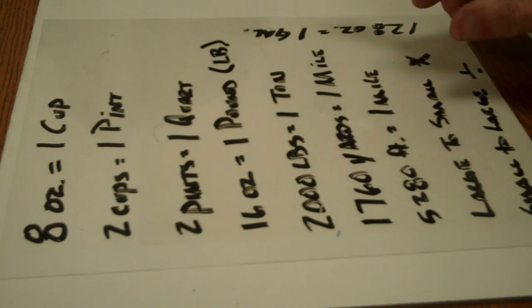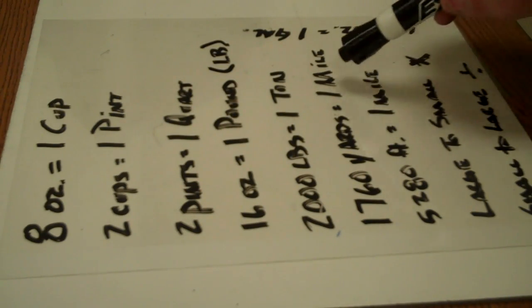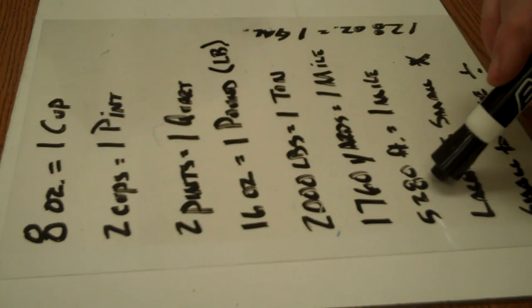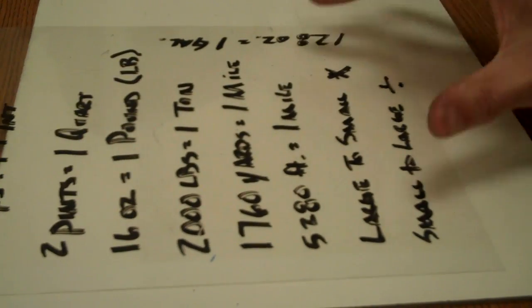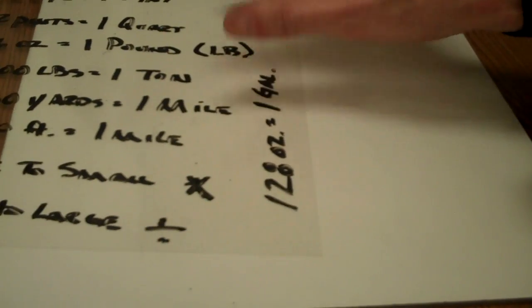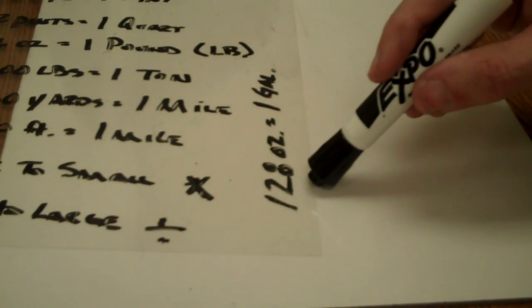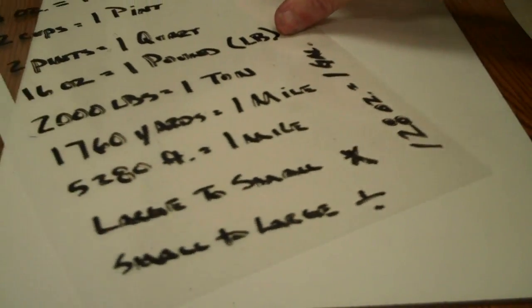This deals with yardage and feet and that type of thing, but go ahead and memorize it: 1,760 yards equals 1 mile and 5,280 feet equals 1 mile. Now, also remember, it's hard to see because it's on the side, that 128 ounces equals 1 gallon. That'll come in handy as well.